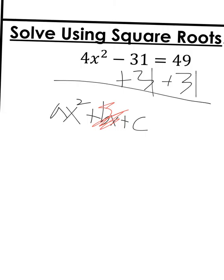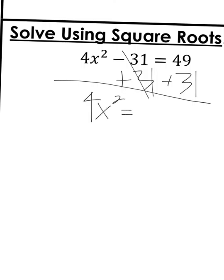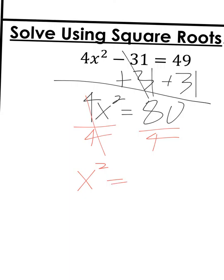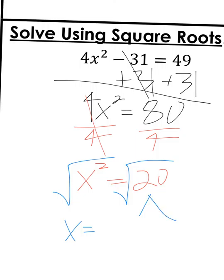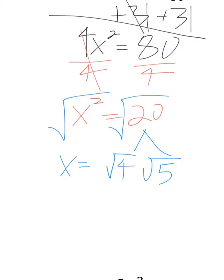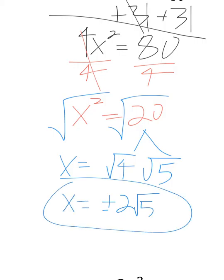So I can add 31 over. What's 49 plus 31? That's 80. So I have 4x squared equals 80. Divide both sides by 4, and I get x squared equals 20. So I'm going to take the square root of 20. I know 20 is 5 times 4, and 4 has a square root, so I'll write that one first. The square root of 4 is plus or minus 2, and the square root of 5 stays behind. So x equals plus or minus 2 times the square root of 5.